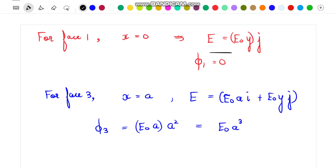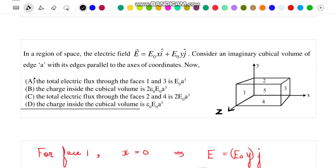The net sum of flux passing through 1 plus 3 is E₀a³, which is actually given to us in option A. So option A is correct.